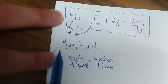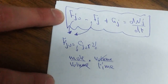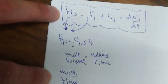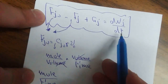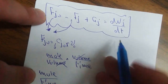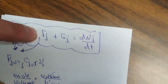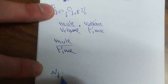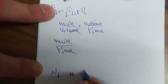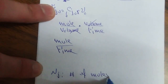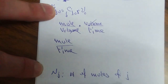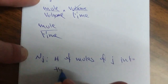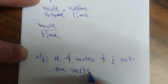فبالتالي الـ F of J naught والـ F of J اللي هي مول per time. بالنسبة لـ dN of J على dT، الـ N of J كتعريف هي عبارة عن number of Moles of J into the system at a specific time.